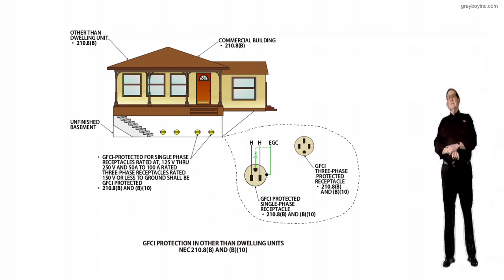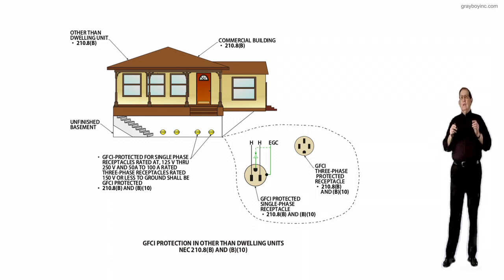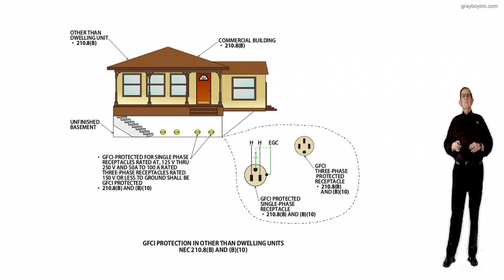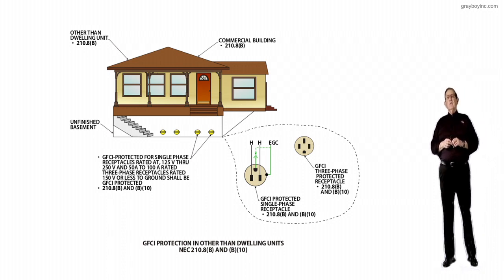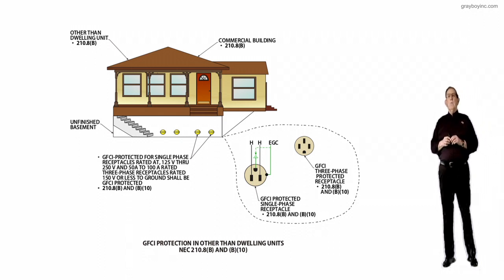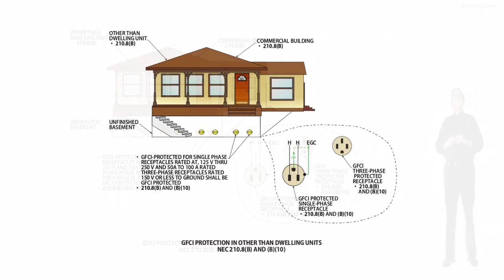Now, as kind of a reminder, 210.8A5 deals with dwelling unit basements, finished or unfinished, but notice this is unfinished only where you would have equipment that you had to cord and plug connect to circuitry that would give them more power than the 120-volt ground receptacles would provide.